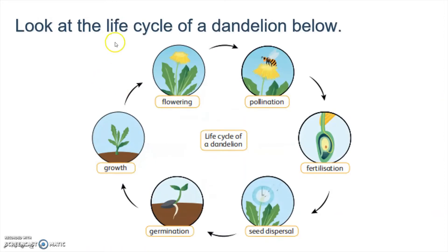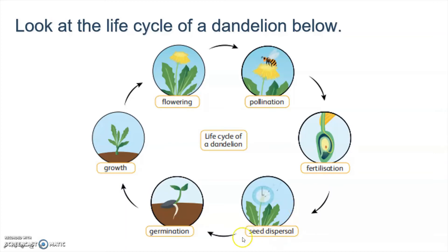Next, look at the life cycle of a dandelion. The first step is flowering, and then pollination by a pollinator such as a bee. Then fertilization, then seed dispersal — seeds are carried by the wind — and then germination, and then the plant grows.